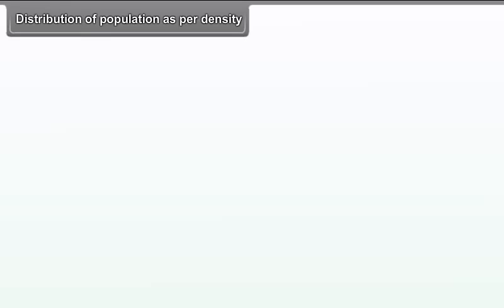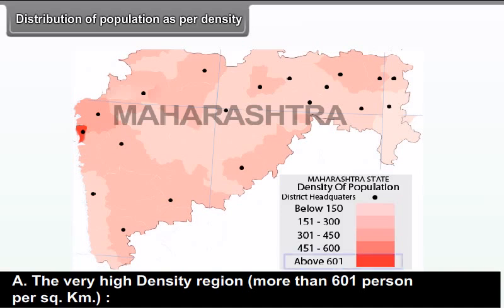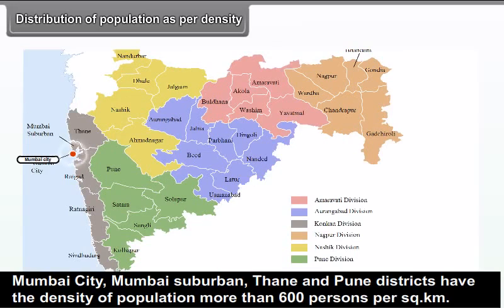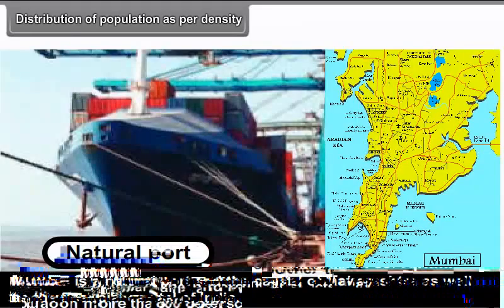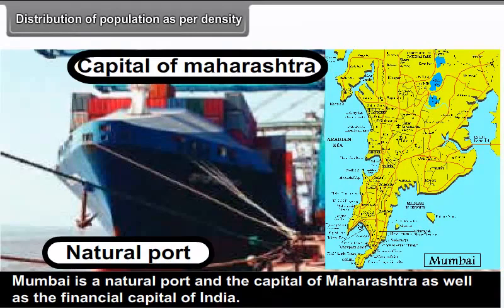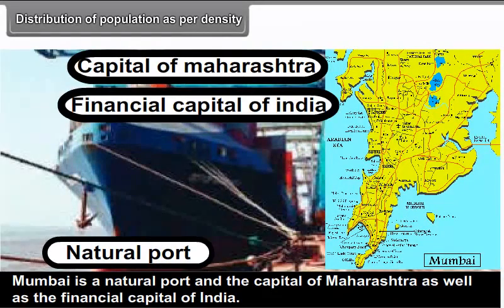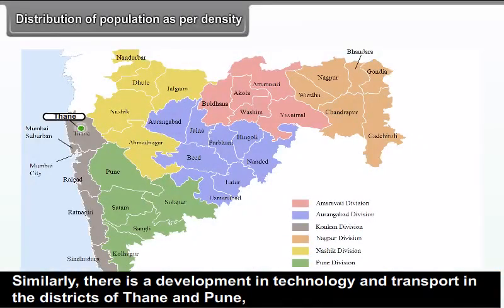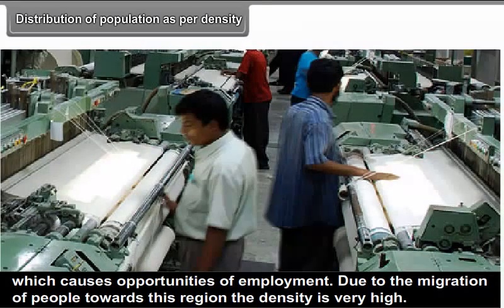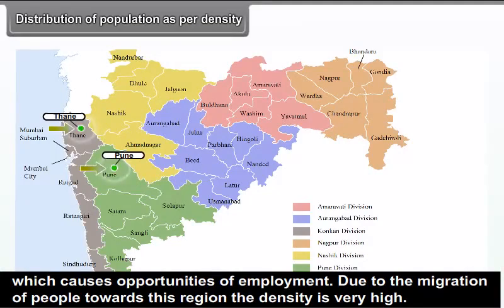7.1.2 Distribution of Population as per Density. A) Very High Density Region — more than 601 persons per square kilometer. Mumbai City, Mumbai Suburban, Thane, and Pune districts have a density of more than 600 persons per square kilometer. Mumbai is a natural port and the capital of Maharashtra as well as the financial capital of India. Thane and Pune have developed technology and transport, creating employment opportunities, which causes very high density due to migration.